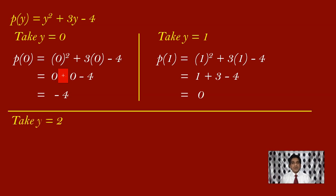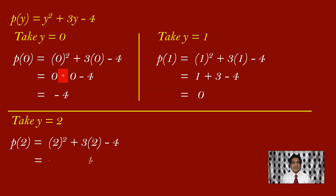Let us take one more. Now I would like to find p of 2. So p of 2 is 2 square plus 3 of 2, minus 4. 2 square is 4, 3 twos are 6. So you will have 4 plus 6, minus 4. 4 plus 6 is 10, 10 minus 4 is 6.